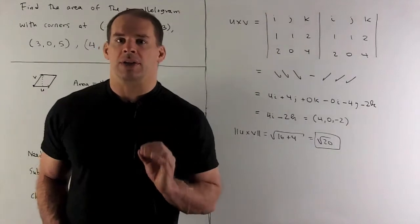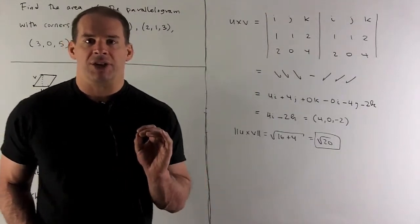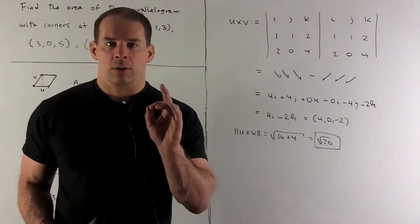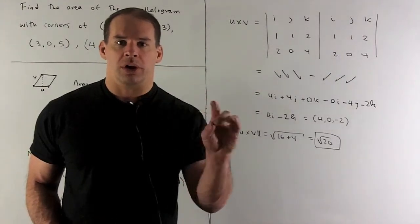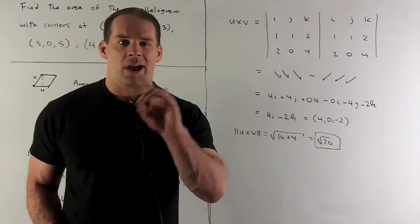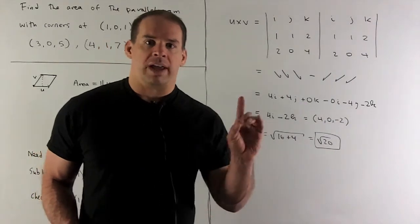Now, we're going to take the cross product. Our procedure for that is: I'm going to put i, j, and k top of a matrix. We load in our two vectors. I write all that stuff out all over again right next to it.